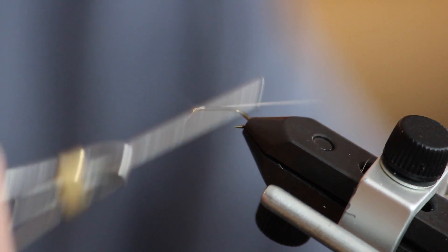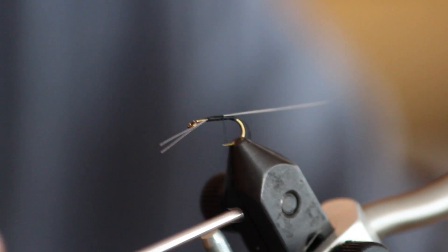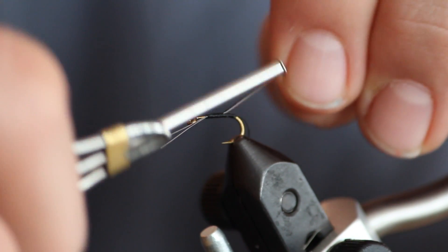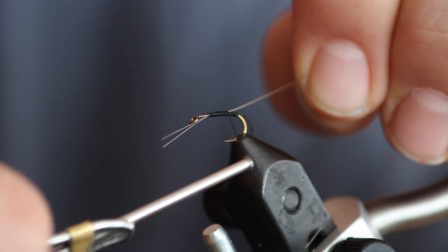When making tight thread wraps on top of your microfibbets, pull the tails of your microfibbets up and at a slight angle to give them a more natural look.